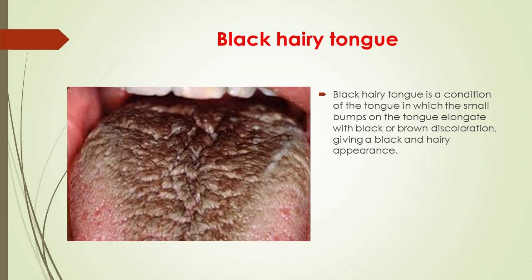Black hairy tongue is a condition in which the small bumps on the tongue elongate with a black or brown discoloration, giving a black and hairy appearance. The appearance may be alarming but it is a harmless condition. Predisposing factors include smoking, xerostomia, dry mouth, soft diet, poor oral hygiene, and certain medications. Management is by improving oral hygiene, especially scraping or brushing the tongue.